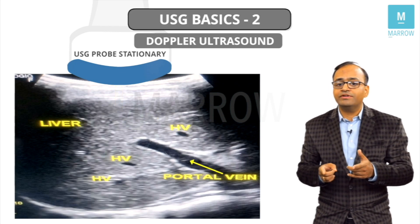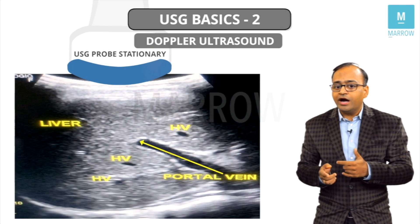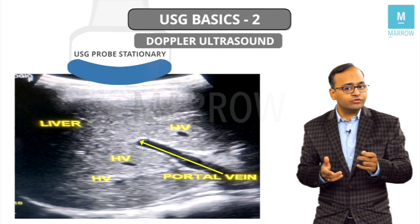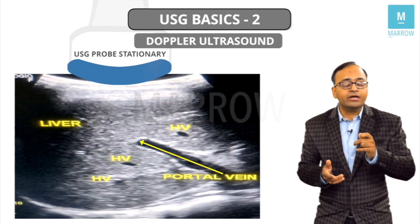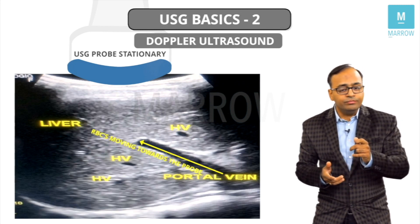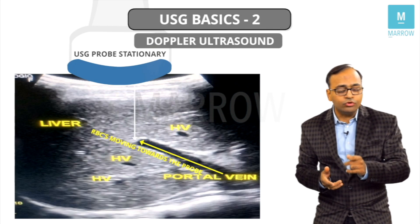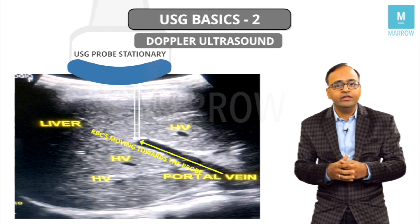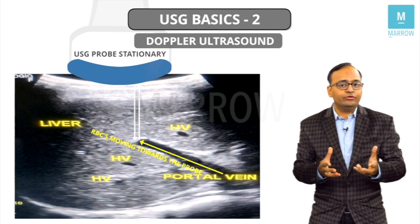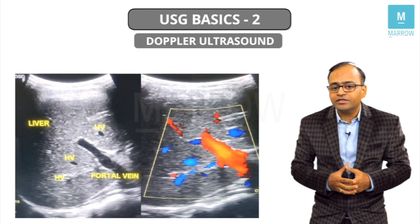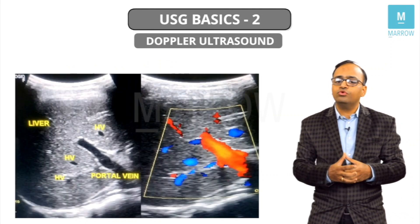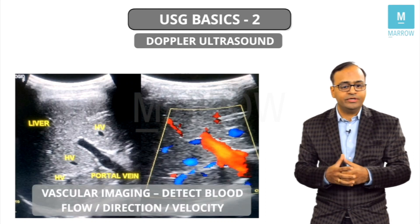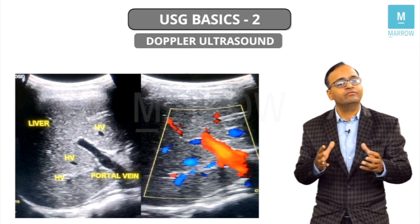But inside the liver there is a blood vessel — the portal vein — where blood is flowing. RBCs are flowing into the liver parenchyma. These RBCs are reflectors of sound. The probe is stationary, but the RBCs are moving. So if we apply the ultrasound beam to screen the portal vein, there is relative motion between them and the Doppler effect will come into play — frequency will change. The most important application of Doppler ultrasound is that it is used for vascular imaging to detect the blood flow, direction, and velocity of blood flow.